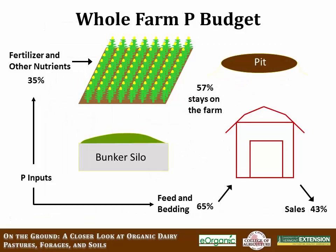This work was done in Vermont a number of years ago, so these are real numbers from Vermont farms. Looking at phosphorus inputs: 65% of phosphorus that comes onto farms is actually in the form of feed — primarily grain — and then a small amount in bedding. Only 35% comes from other inputs, and I would say that's even less now since I don't see people using that much phosphorus fertilizer anymore. Of what comes on the farm, we're only exporting about 43% of it, and almost 60% of the phosphorus ends up staying on the farm.